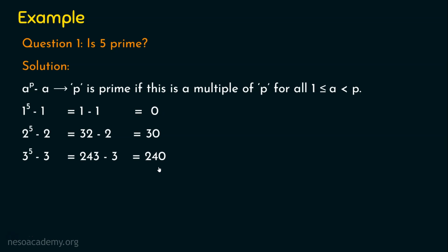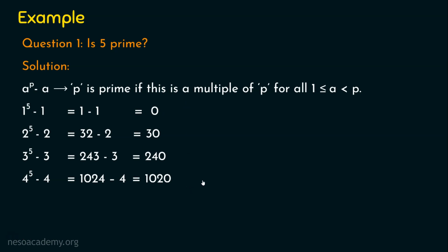Finally, we are left with a = 4. Since p = 5, we run the algorithm from a = 1 to a = 4. For a = 4: 4^5 − 4 = 1024 − 4 = 1020, which is also a multiple of 5. We have calculated a^p − a for a values from 1 to 4, and the result is always a multiple of 5. Therefore, Fermat's primality test says 5 is a prime number.